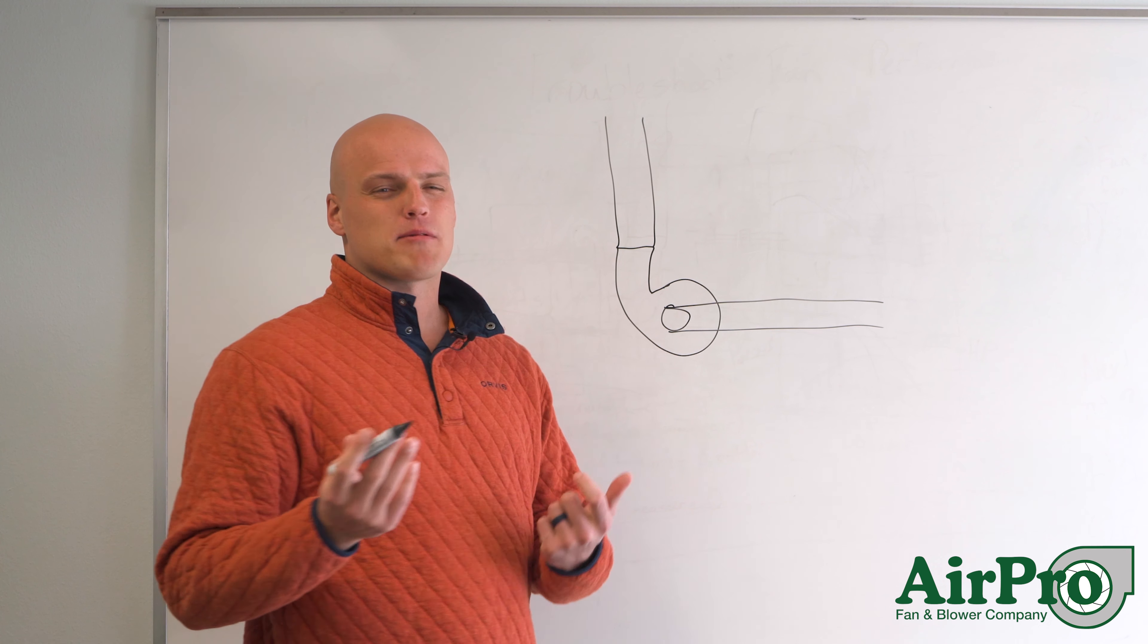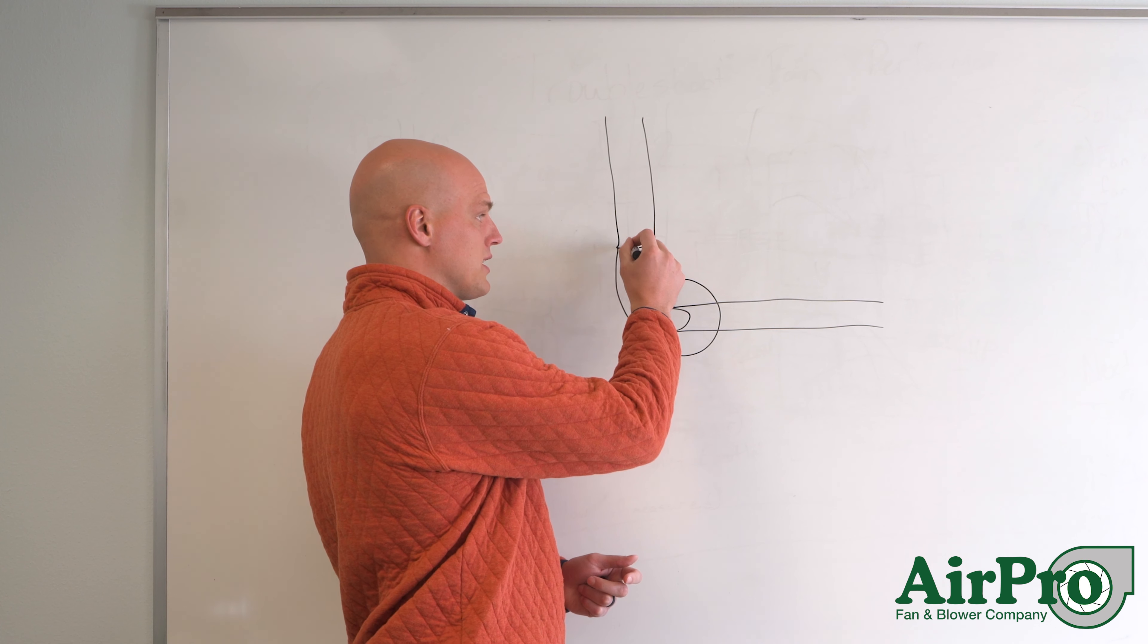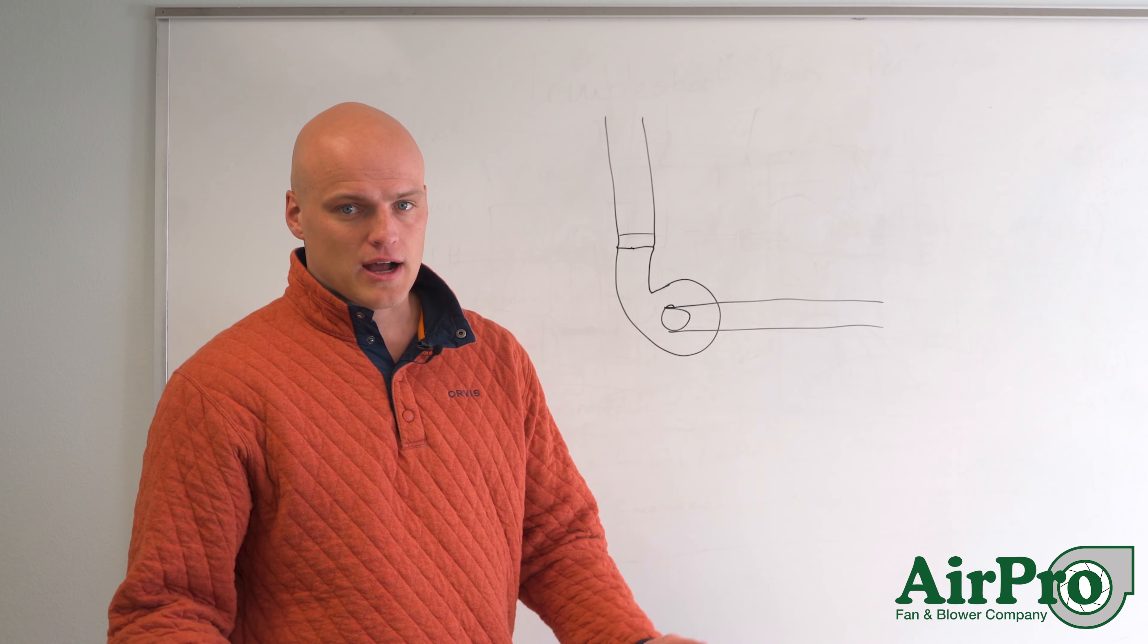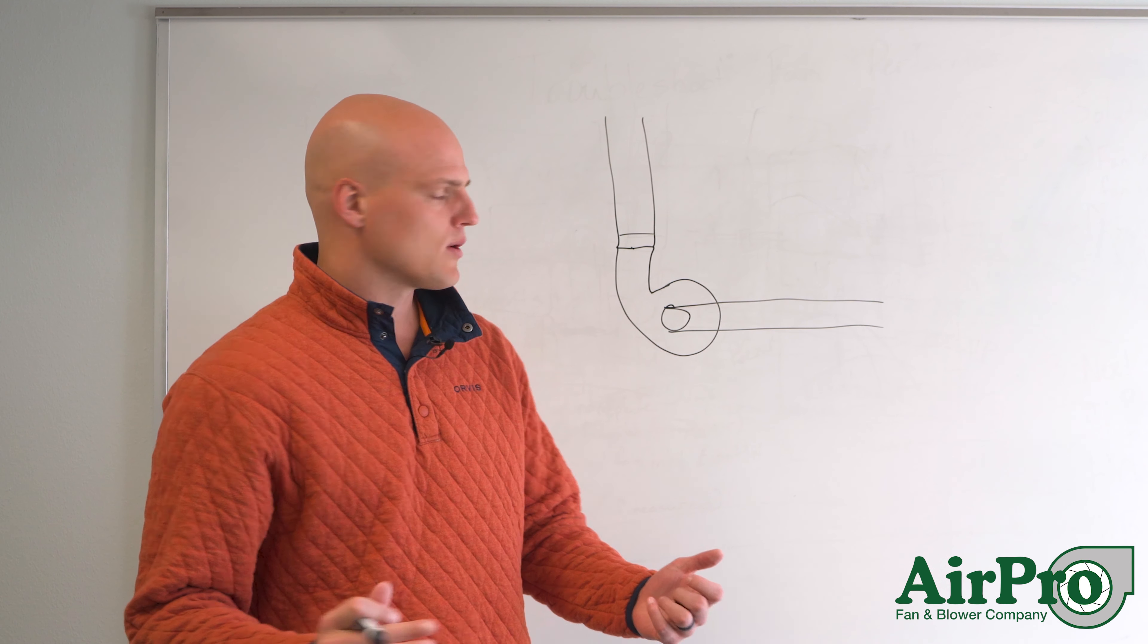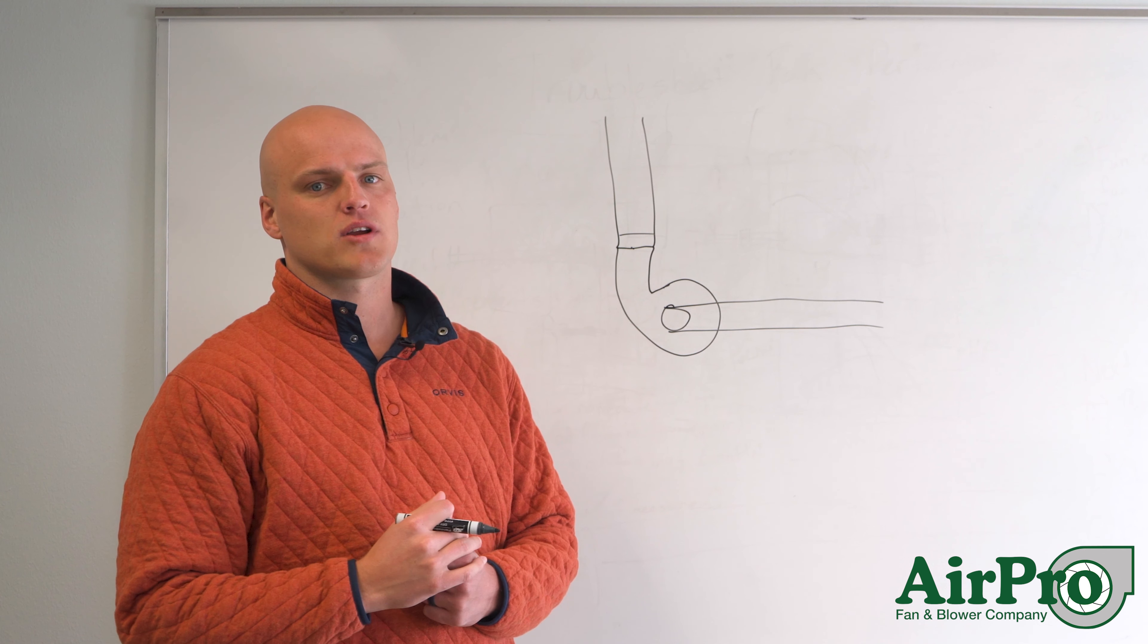So where we would probably look to put this, if you're just looking to resist flow in the field, I recommend putting it on the outlet of the fan. And all you're looking to do is create a blockage in the airstream. So an opposed blade outlet damper right here can help add some pretty quick resistance.